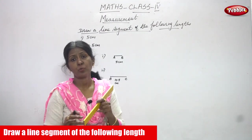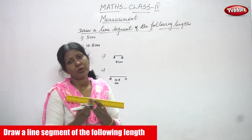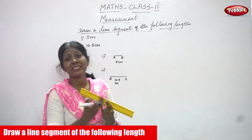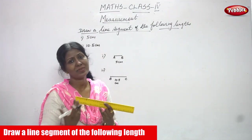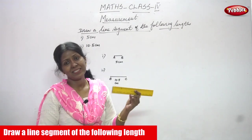This part is measured in what? This scale is measured in what? Centimeters. Because 30 cm is given, 0 to 30 cm is given. You have to use a scale and draw a line segment.